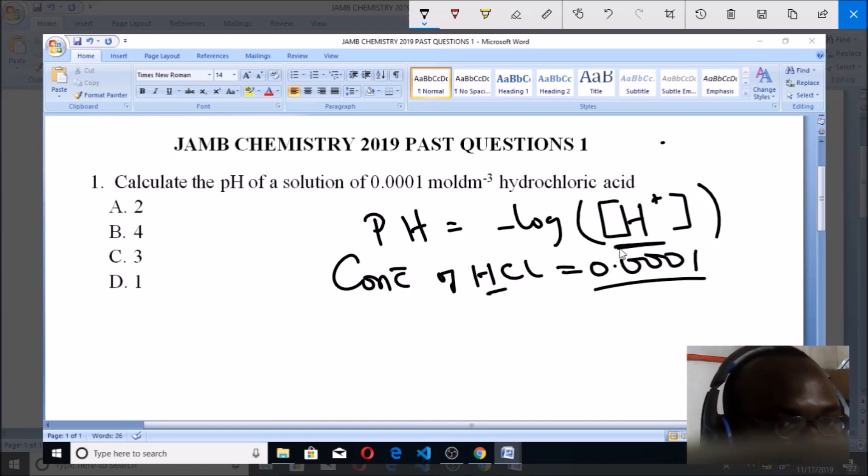So the pH now will be the same thing as the negative logarithm of the concentration, and that concentration is 0.0001. You know that this you can also write as 10 to the power minus 4, because we have 1, 2, 3, 4 decimal places.